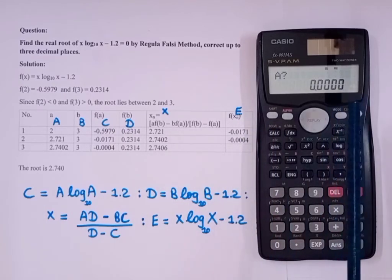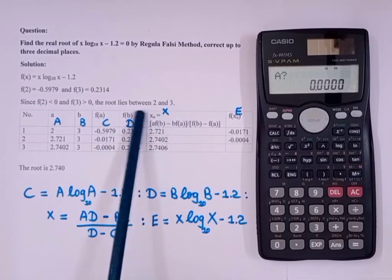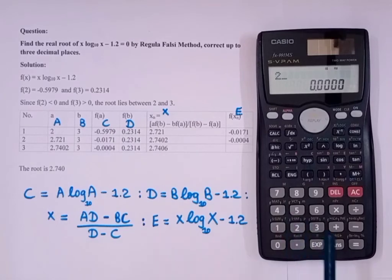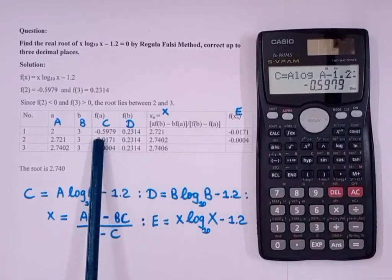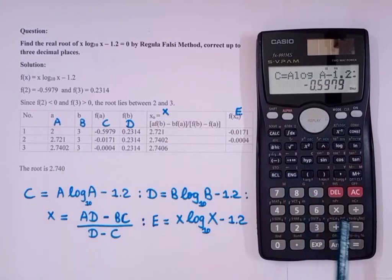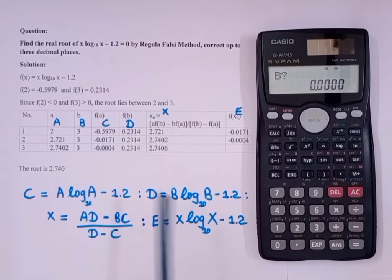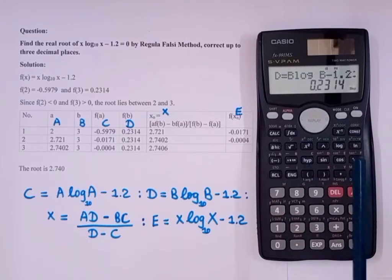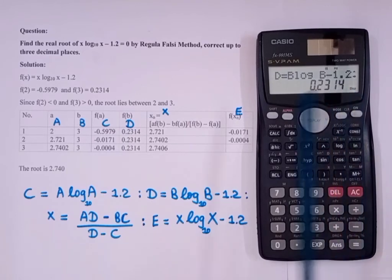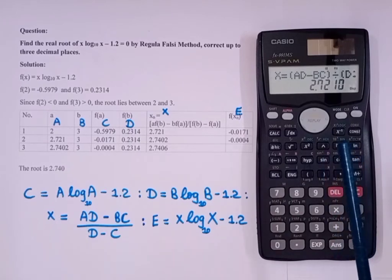We will input the values of a and b. So as you know, we have got two values that the root lies between 2 and 3. First, our a value will be 2. Press equal. So as you can see here, we are getting minus 0.5979. That is, we have got our f(a). Then again press equal. Here also you will not press any other key. You will just press equal. Then b is 3. So input 3. Again press equal. So we are getting 0.2314. This is our f(b). Again press equal. So you are getting this, which is your xn, that is 2.721.